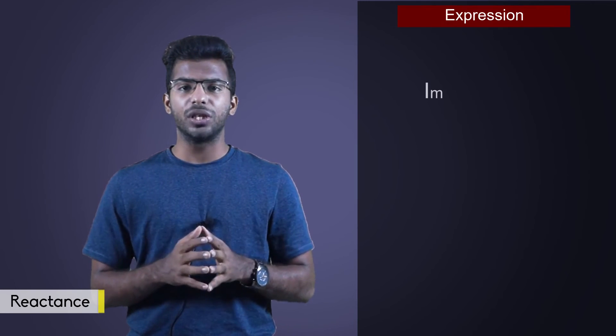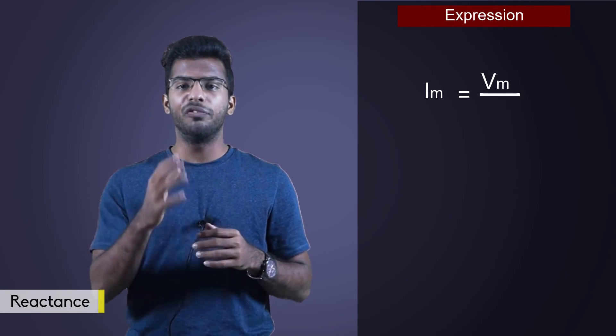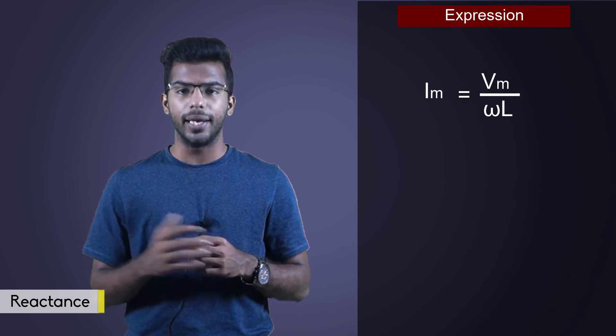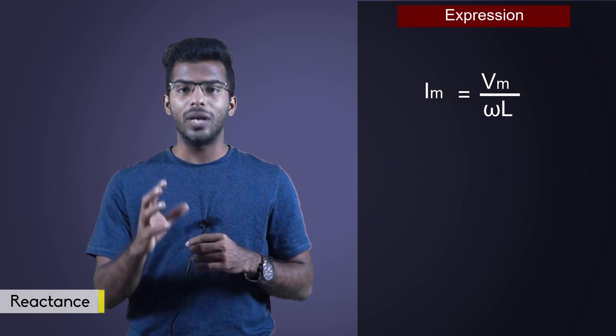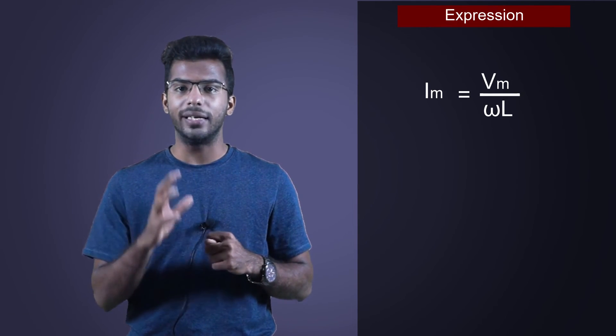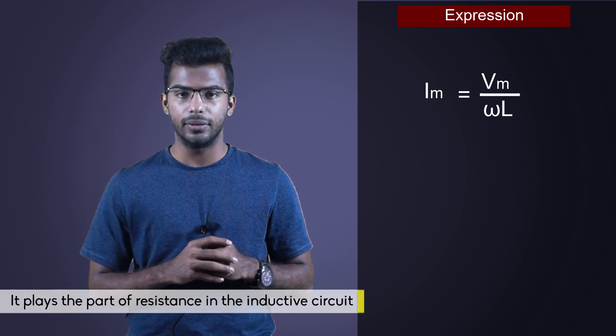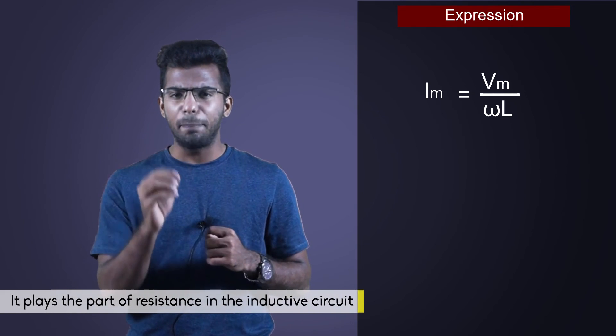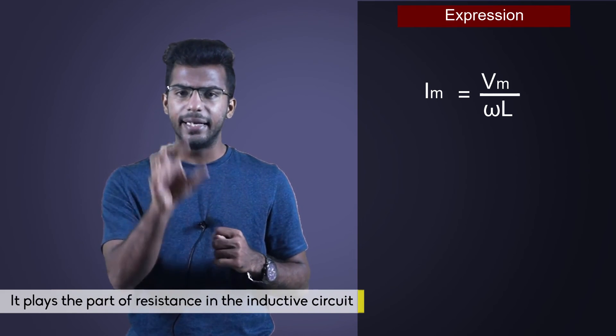The final concept in this video is about reactance. In the expression Im is equal to Vm divided by omega L, omega L is known as reactance or it is denoted as XL. It plays the part of resistance in the inductive circuit.